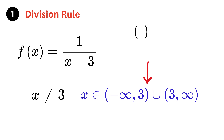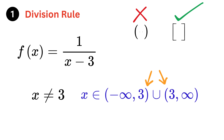Note: a curved bracket means the number next to it is not included in the domain, and a square bracket means the number is included. Both curved brackets here mean we are not including 3. Also, there is always a curved bracket beside infinity because infinity is not an actual number and cannot be included in the domain.